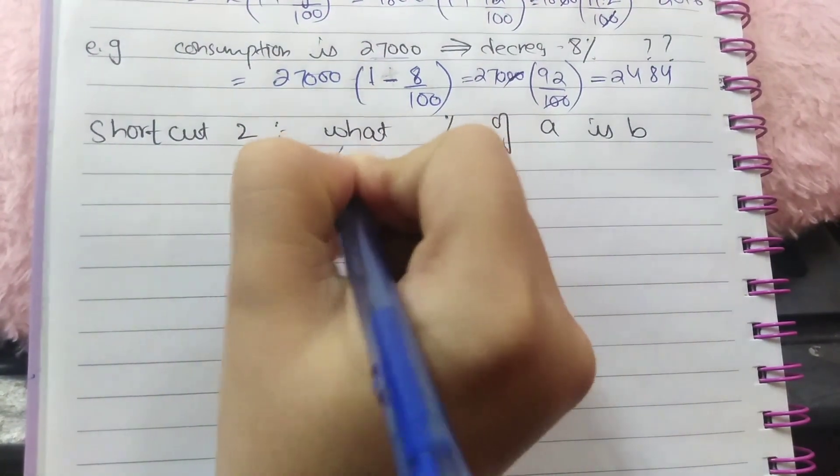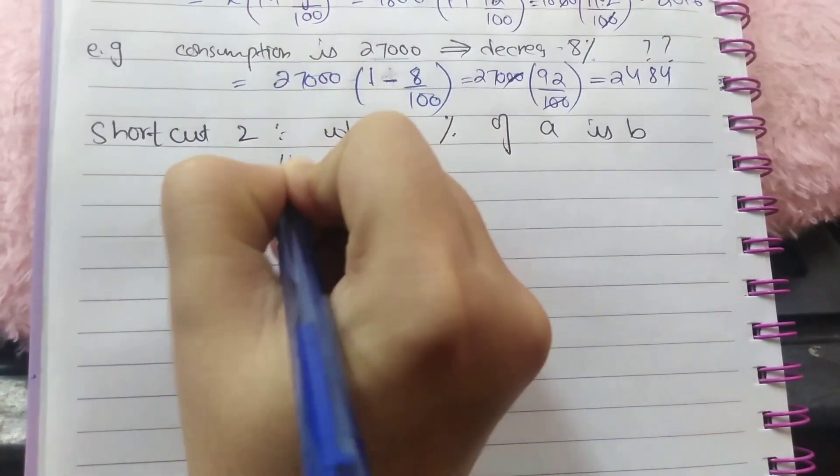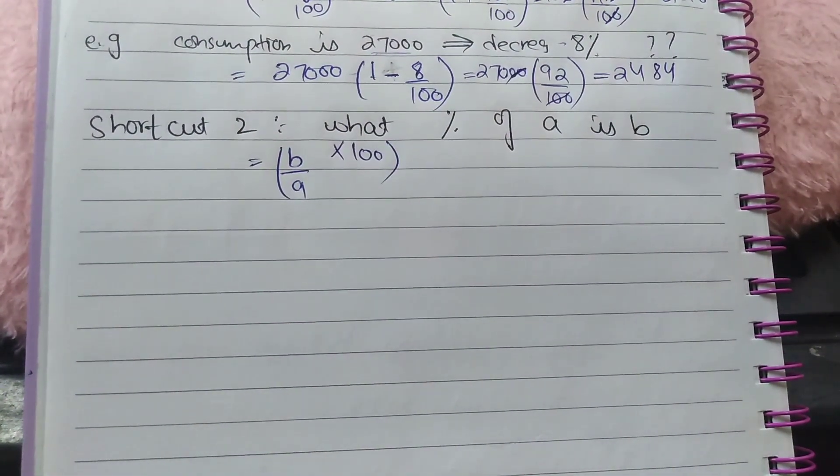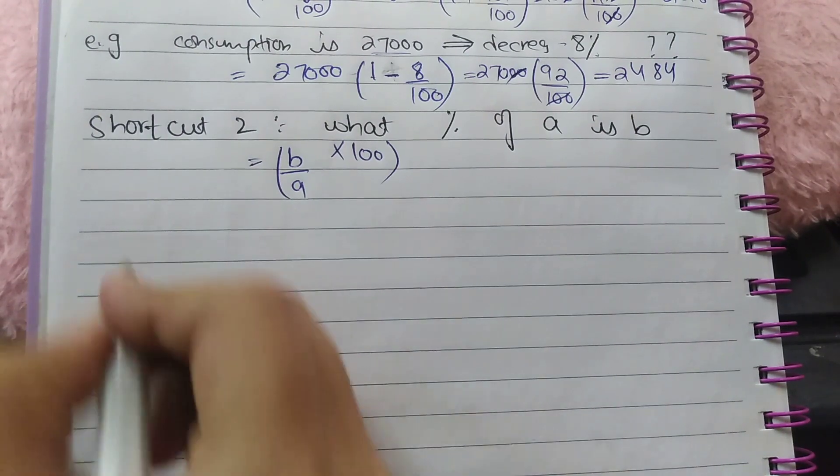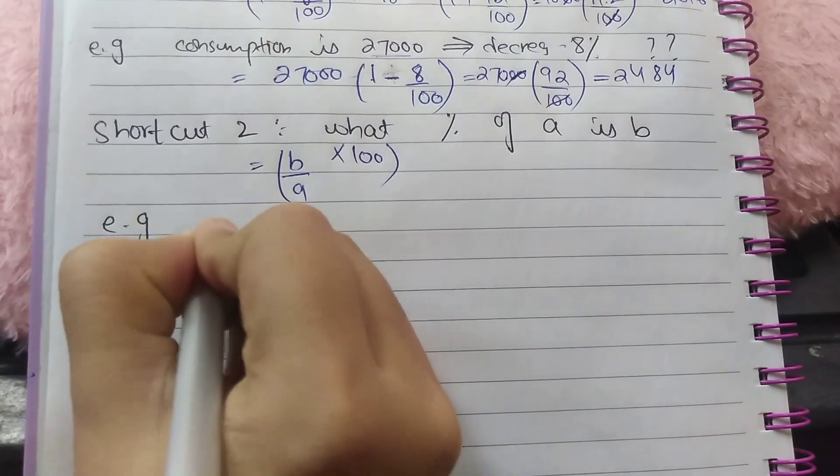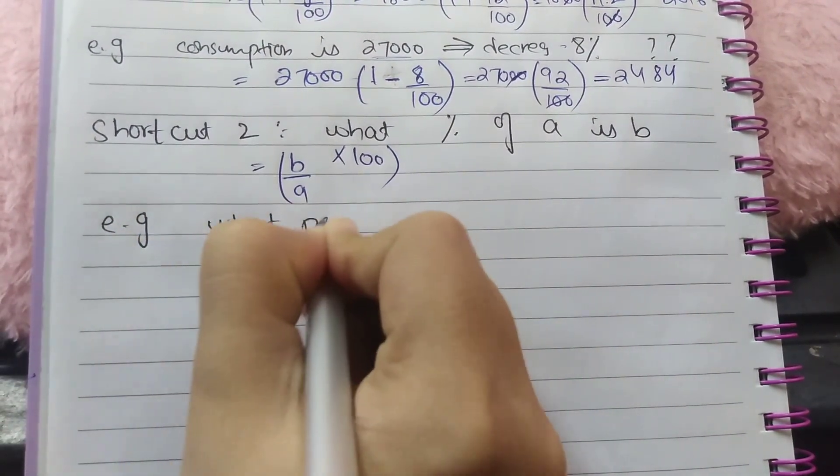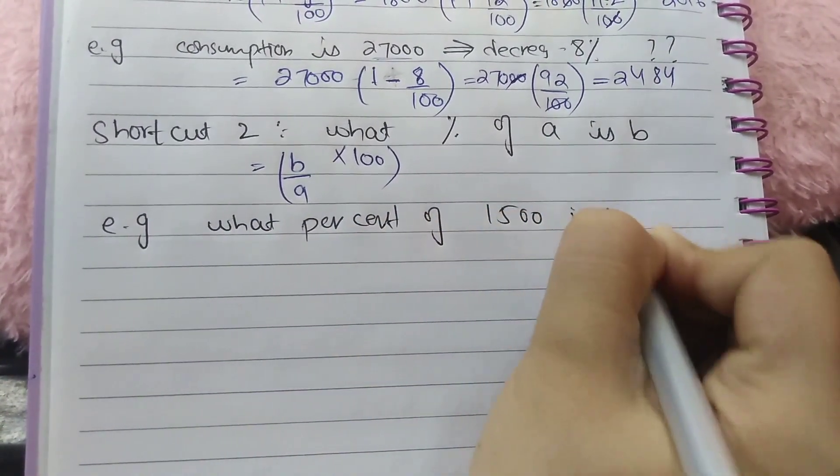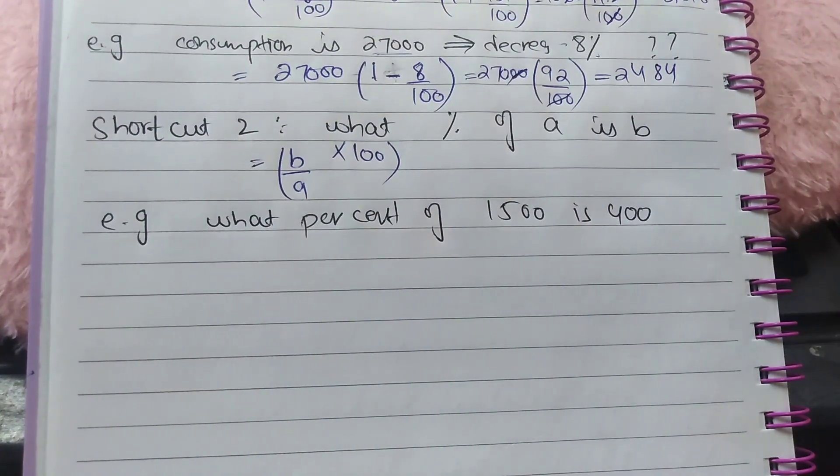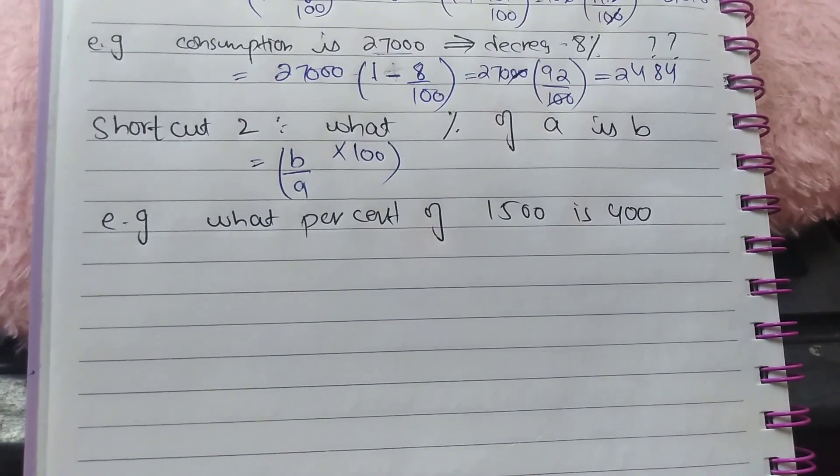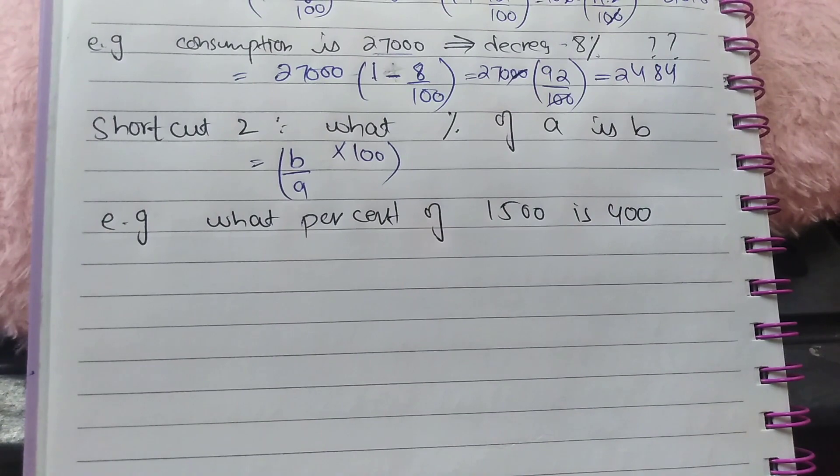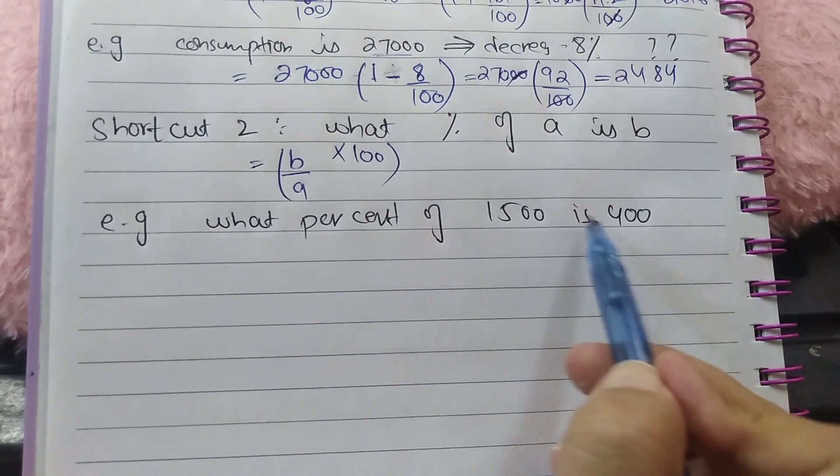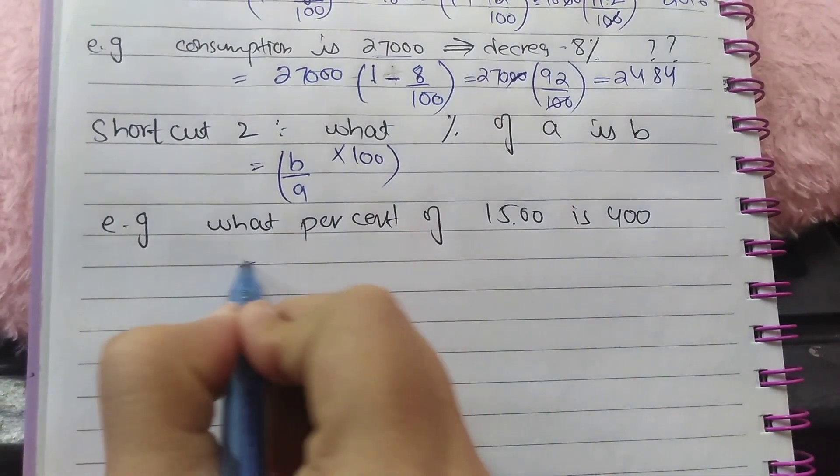For such cases we will use formula B by A into 100. Let's do an example: what percent of 1500 is 400? So 1500 is larger quantity and 400 is smaller quantity.